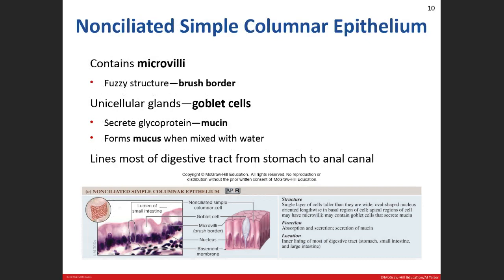The non-ciliated type does not contain any cilia — the hair-like apical surface modification of the plasma membrane. Instead, it has microvilli. On a microscope slide, microvilli appear as a fuzzy-like structure, so we call it the brush border. Within this epithelium, we have our unicellular glands — the goblet cells — named because they resemble a wine glass or goblet. They produce the glycoprotein mucin, which when mixed with water creates mucus.